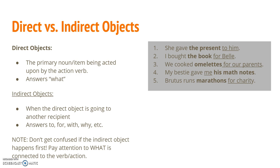What's also important is that there are two different kinds of objects: direct and indirect ones. Direct objects are the primary noun or item being acted upon by that action verb, and it kind of answers 'what.' So in these five sentences, the direct objects are in bold. 'She gave the present to him' — the present is the thing being given; it's the direct recipient of that action. An indirect object occurs when the direct object is going to another recipient, or something else is happening to the object. It answers to, for, with, why, etc.